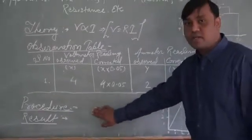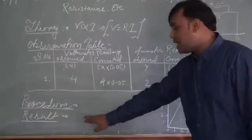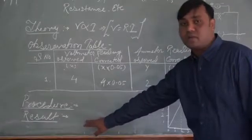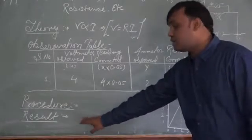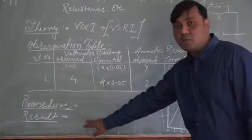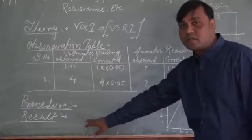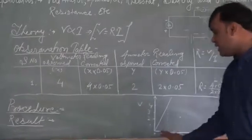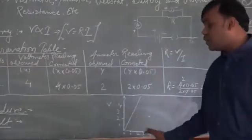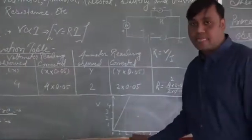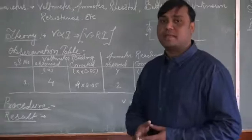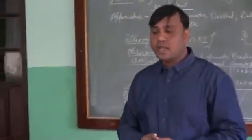Whatever results we obtain, we write them point-wise. Finally, we write the calculation giving the resistance value, and then we plot the graph.